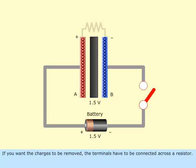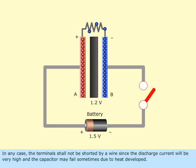If you want the charges to be removed, the terminals have to be connected across a resistor. In any case, the terminals shall not be shorted by a wire since the discharge current will be very high and the capacitor may fail sometimes due to heat developed.